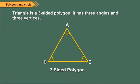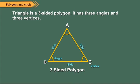A triangle is a three-sided polygon. It has three angles and three vertices. In the figure shown, the sides of triangle ABC are AB, BC, and CA. The three angles are angle ABC or angle B, and angle BAC or angle A. The three vertices are A, B, and C. Triangle is the polygon having the least number of sides. We cannot have a polygon with less than three sides.